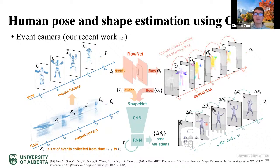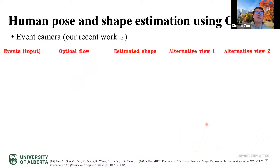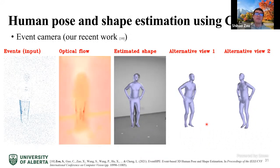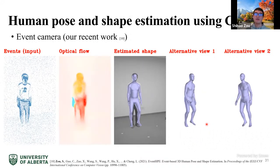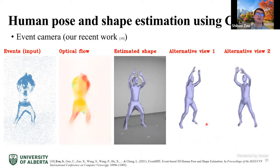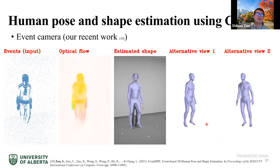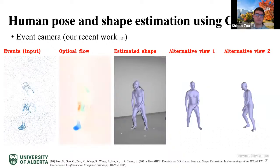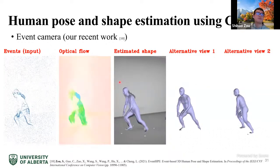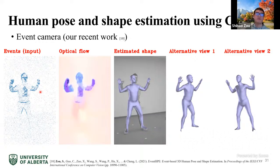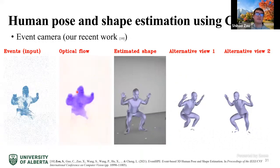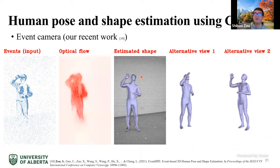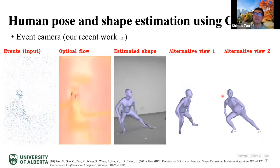The pipeline converts event streams to event frames, feeds them into a flow network (a CNN model) to predict optical flow, then uses the event frames and optical flow in a GRU model to predict pose variations delta-theta through time. This gives human pose estimation at each time point. A short video shows estimated poses and shapes from the event stream, including inferred optical flow and estimated shapes from alternative viewpoints.